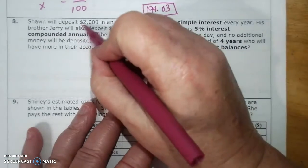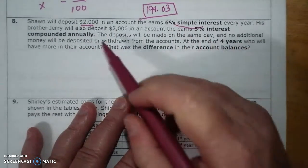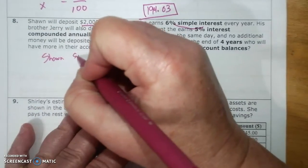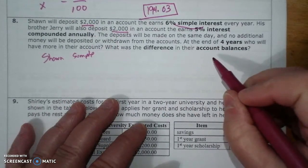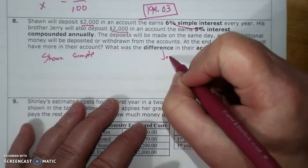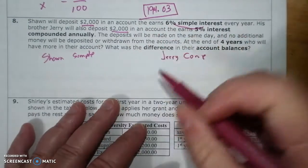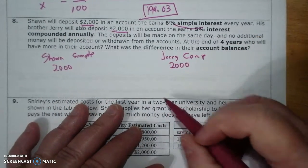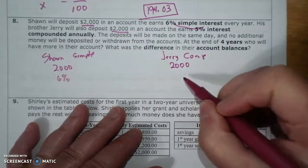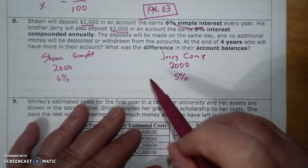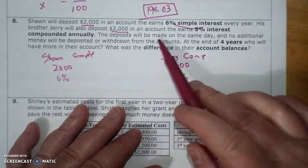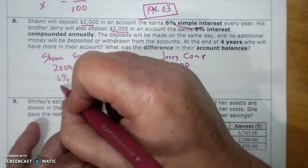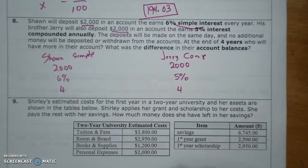Sean deposited that in an account that earns that. His brother deposited that, earns compounded. So we have Sean with simple, we have Jerry with compound. Both have $2,000. Simple had 6% for a rate, compound had 5% for a rate. Deposits will be made on the same day, no additional money, no withdrawals. At the end of 4 years, who will have more in their account?